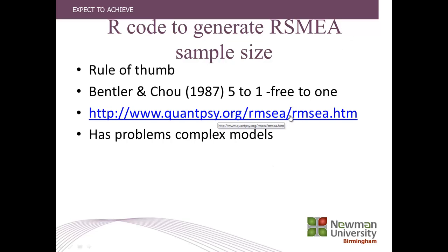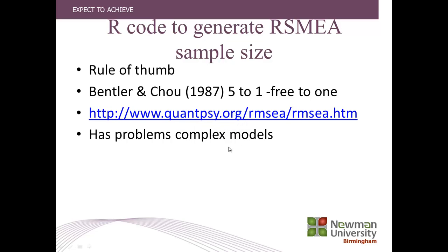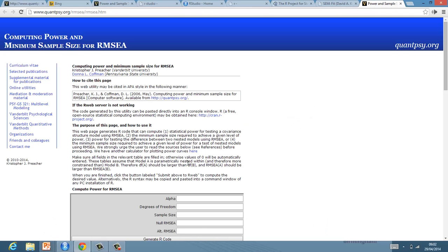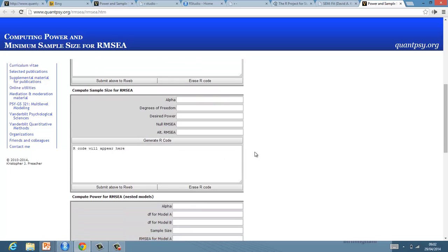What we can do is go onto this website here, which will allow us to generate R code automatically. It's a fantastic program and I would highly recommend it. If you're not comfortable with the coding side, this website will code for you. I'd also point out that the RMSEA statistic does have more problems with more complex models.